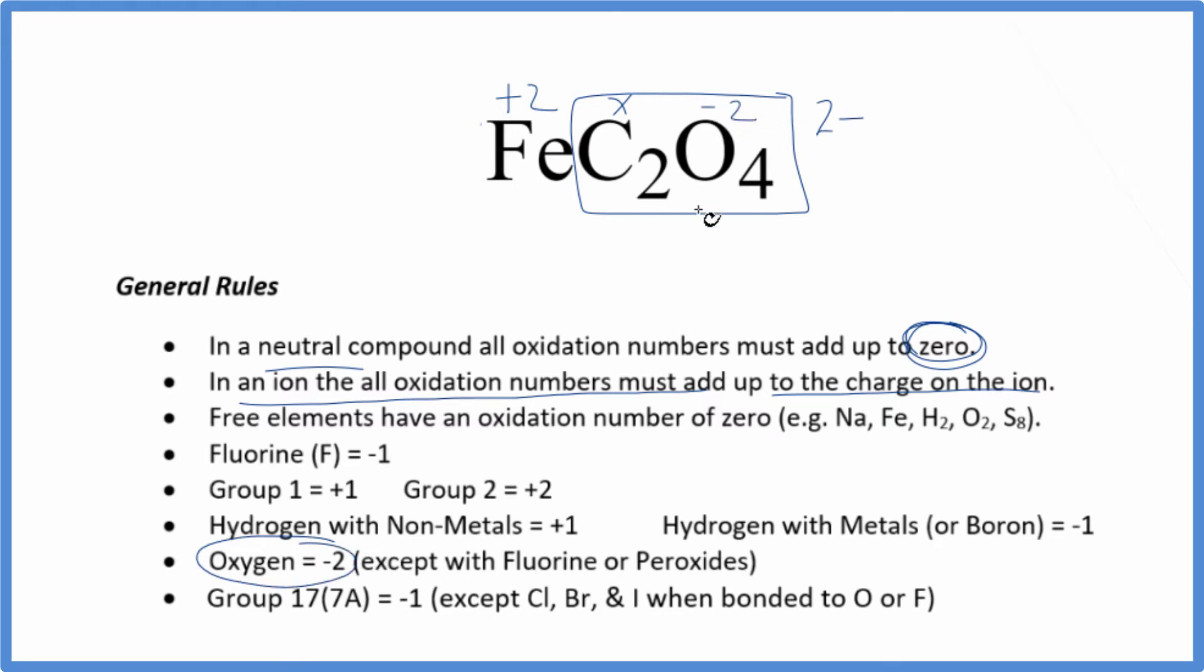So now, because all of this equals the ionic charge, we could say 2 times x, 2x, 4 times minus 2, minus 8, that equals the oxidation number minus 2, since all these oxidation numbers add up to the charge. Note with the charge we put the minus after, so ionic charge it's 2 minus. Oxidation numbers, the negative sign goes before the number.